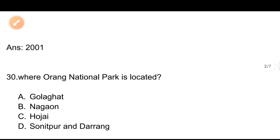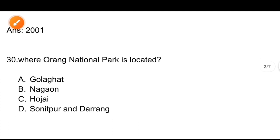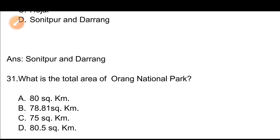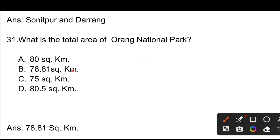Question number 30/31: What is the total area of Orang National Park? The correct answer is 78.81 square kilometers. Option number 2 is the correct answer.